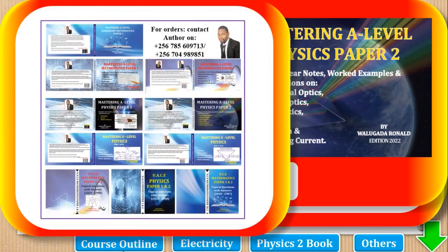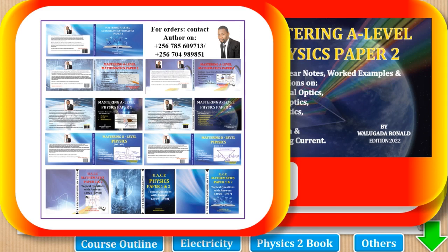We also have other books. If you offer Physics, you need 3 books: Mastering Elbow Physics Paper 1, Mastering Elbow Physics Paper 2, and a Topical Question Bank. If you also offer Principal Math, you need 3 books: Mastering Elbow Math Paper 1, Mastering Elbow Math Paper 2, and a Topical Question Bank. If you offer Subsidiary Math, you only need 1 book: Mastering Elbow Subsidiary Mathematics.